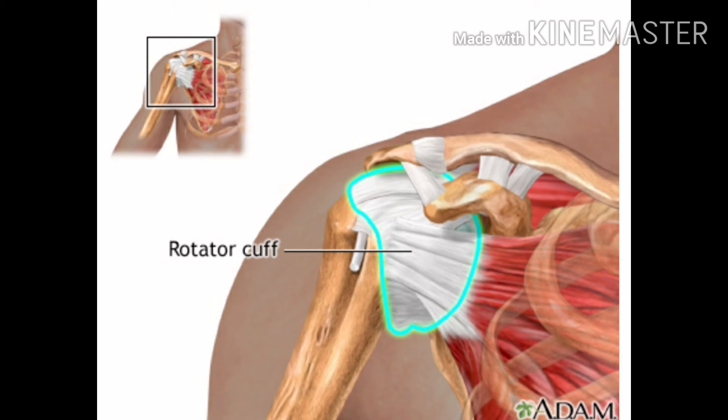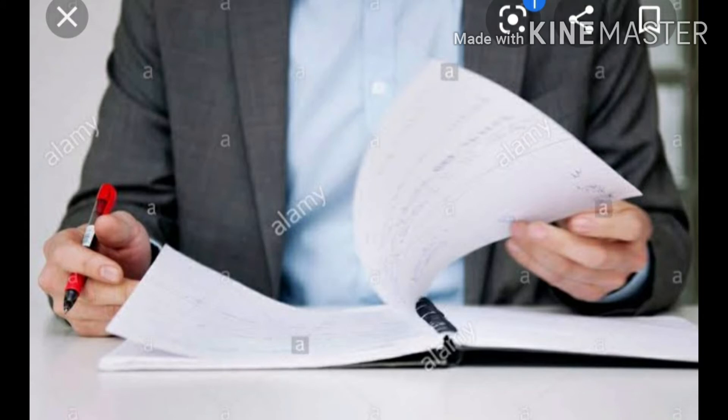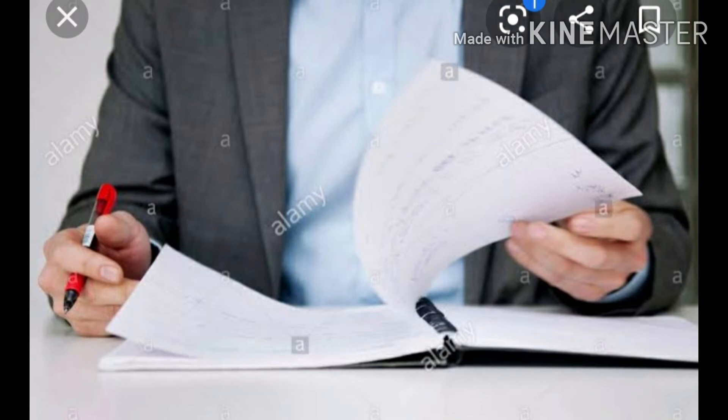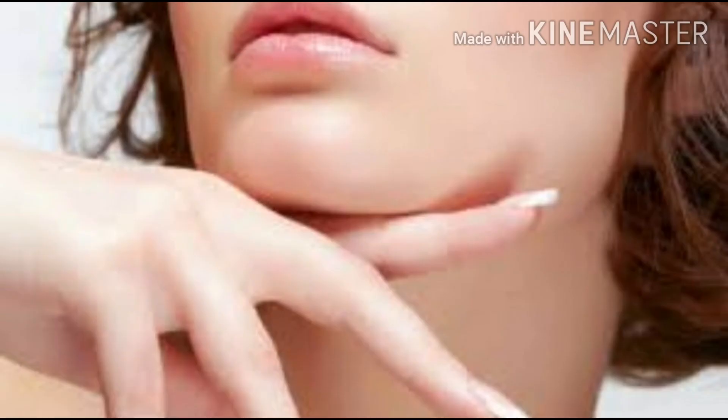Joints also help in smaller movements. For example, if you want to flip the pages of a book, hold a pen, catch a ball, or grip a ball, these joints help us to do such activities. If you want to really feel these joints, place your finger on your jawline — you can feel the joint there.